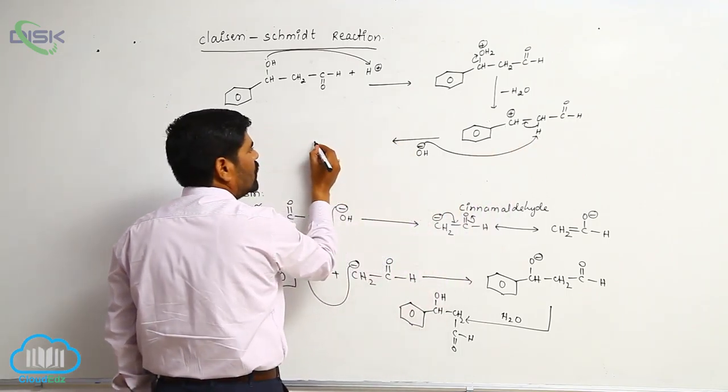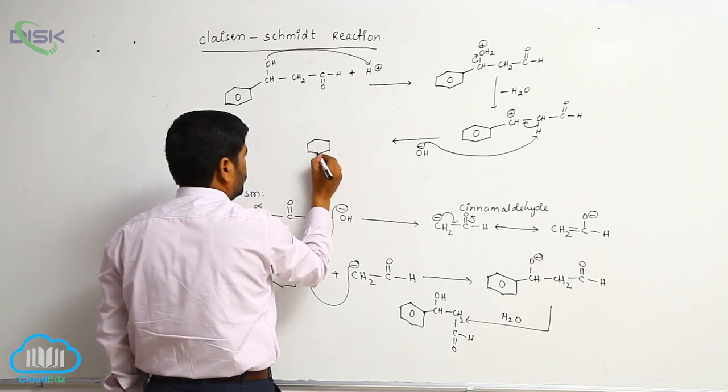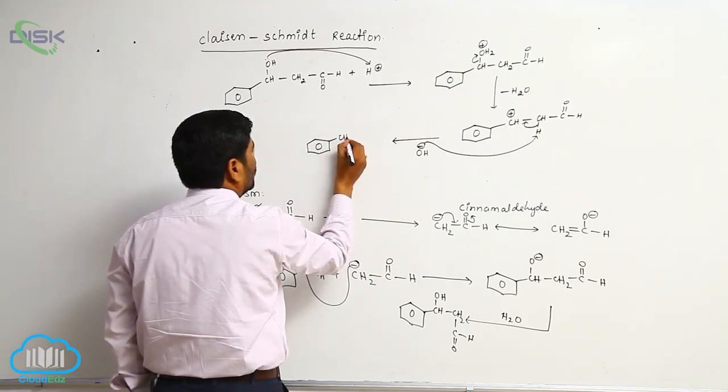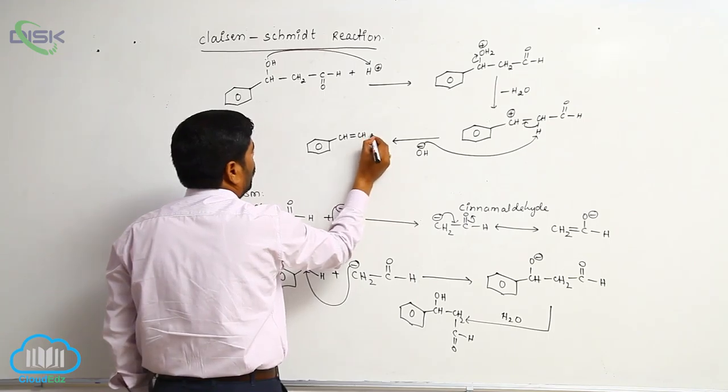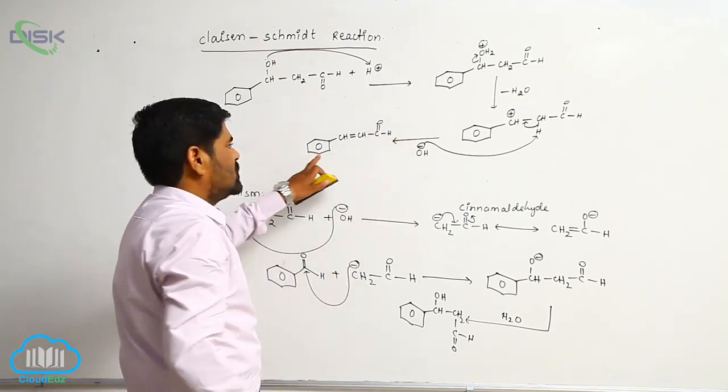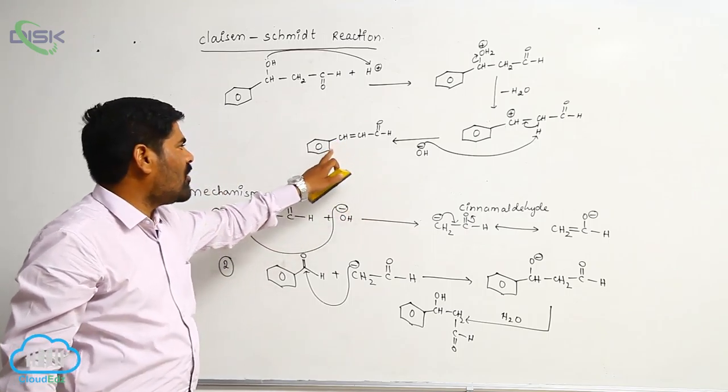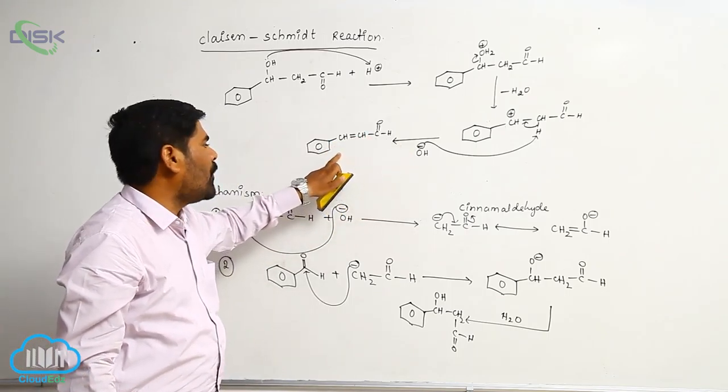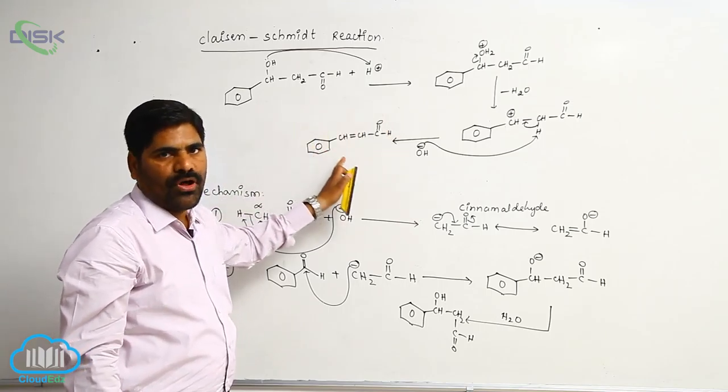Now loss of water molecule takes place to form CH double bond, C double bond O, H. This is known as an alpha-beta unsaturated carbonyl compound, known as the aldol product.